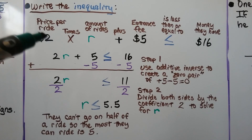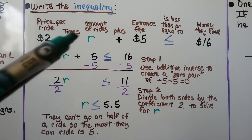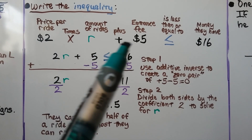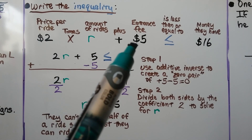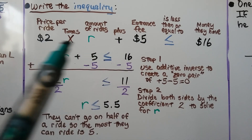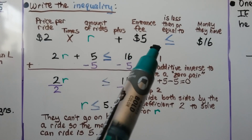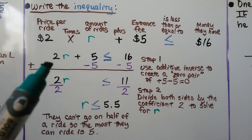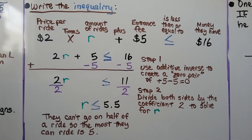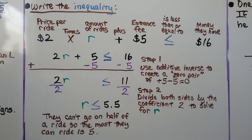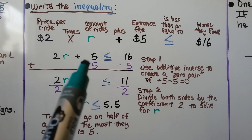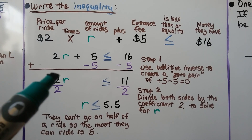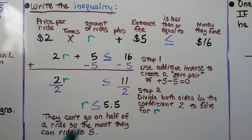The price per ride is $2, multiplied by the number of rides R, and we add the $5 entrance fee. Whatever this amount — 2R plus 5 — it's going to be less than or equal to $16, because that's all the money they have. So we've got 2R plus 5 is less than or equal to $16. Step 1: use additive inverse — add a negative 5 to both sides — create a zero pair, and we're left with 2R is less than or equal to 11. 16 minus 5 is 11.